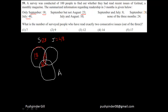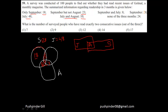July and August is equal to 10. July and August is this whole overlapping area. That means this portion must be equal to seven, then only seven plus three will be equal to 10. Now he's asking what is the number of surveyed people who have read exactly two consecutive issues. Two consecutive issues doesn't mean exactly two out of three — it means they have read the magazine in consecutively two months. There are three months: July, August, and September. People who read July and August are two consecutive months, and people who read August and September are two consecutive months.